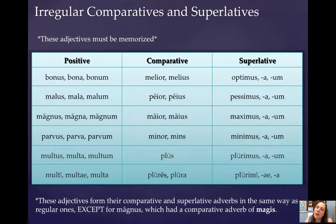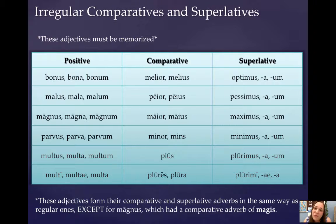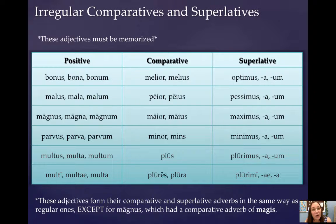Magnus, magna, magnum becomes maior, maius, which means greater. You've previously learned this word as meaning ancestors, and that is actually true — the Romans considered their ancestors their 'greaters,' people who came before them and therefore were greater than they were. So if you see this word in the plural as a substantive, it is almost certainly to be translated as ancestors. Maximus, maxima, maximum means the greatest. If you think back to the temple on the Capitoline Hill — the temple to Jupiter Optimus Maximus — that is, in fact, the temple to Jupiter, the best and greatest.